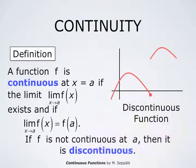Here we have the graph of a function which is discontinuous at the point indicated by the red dot.